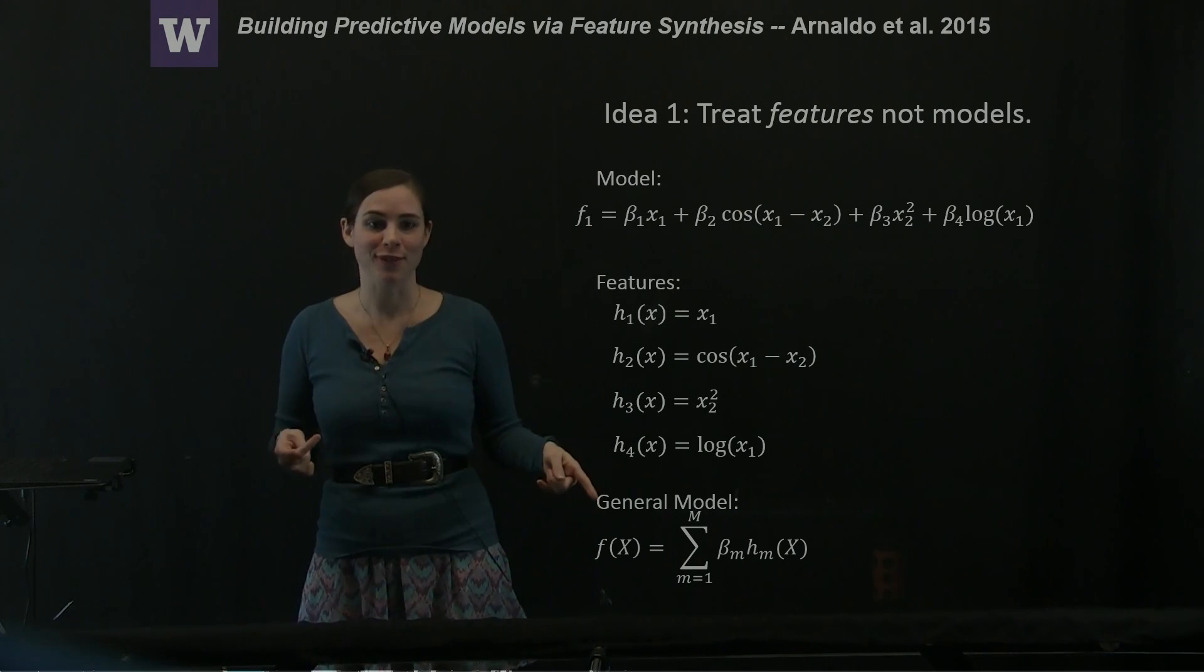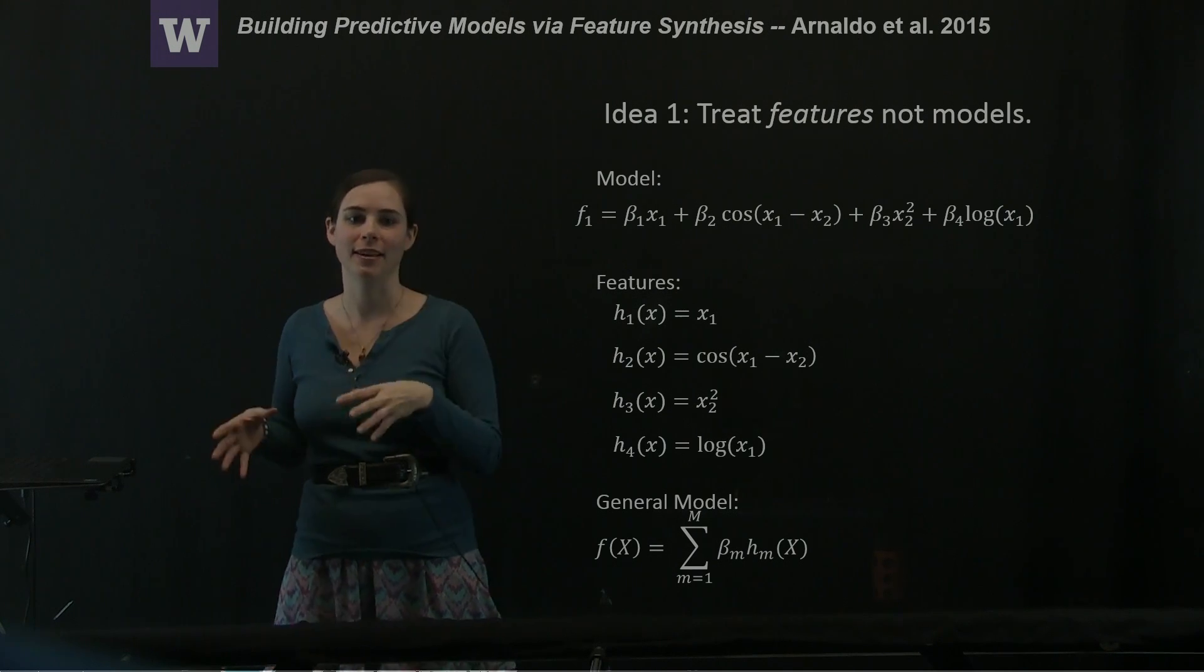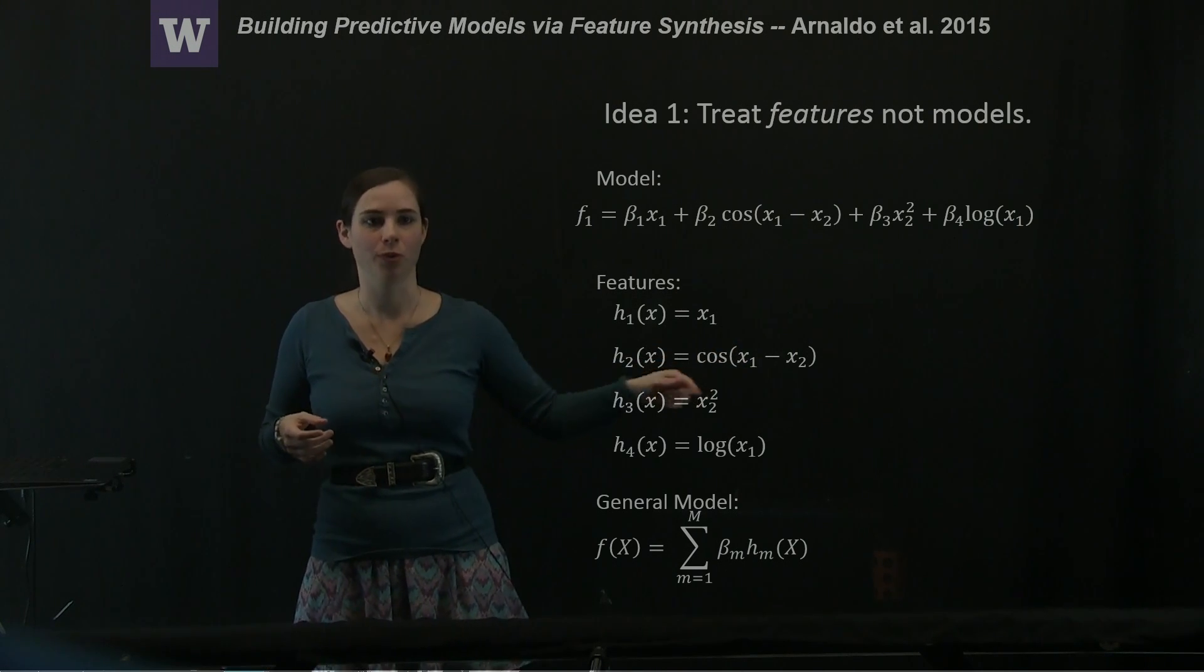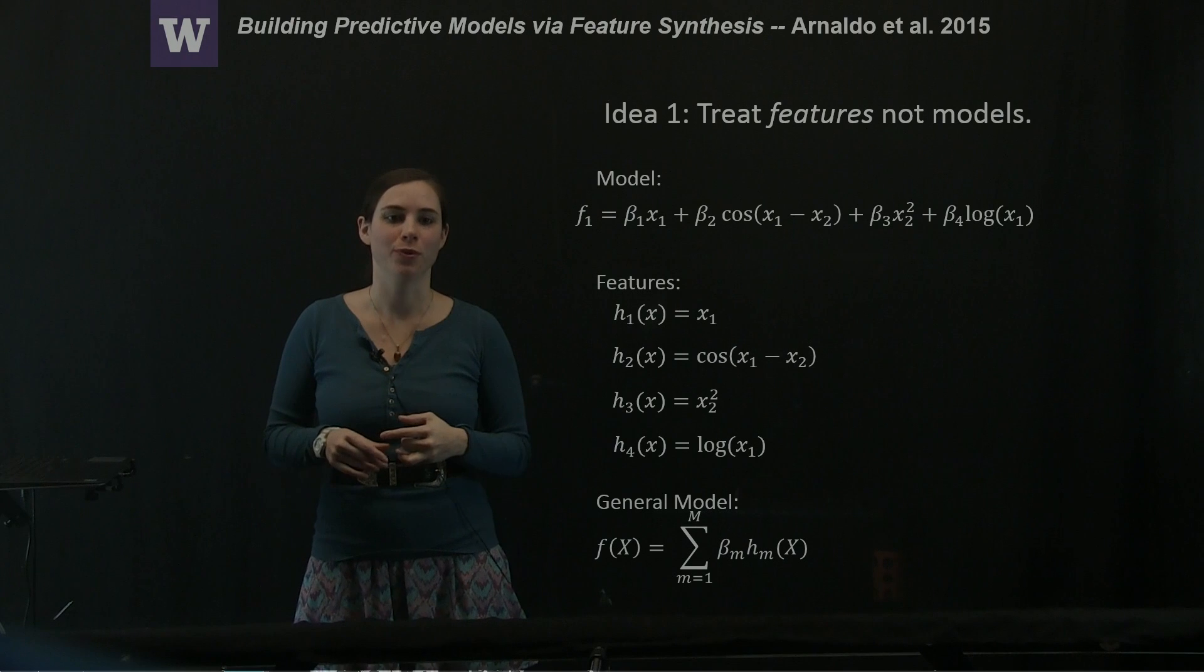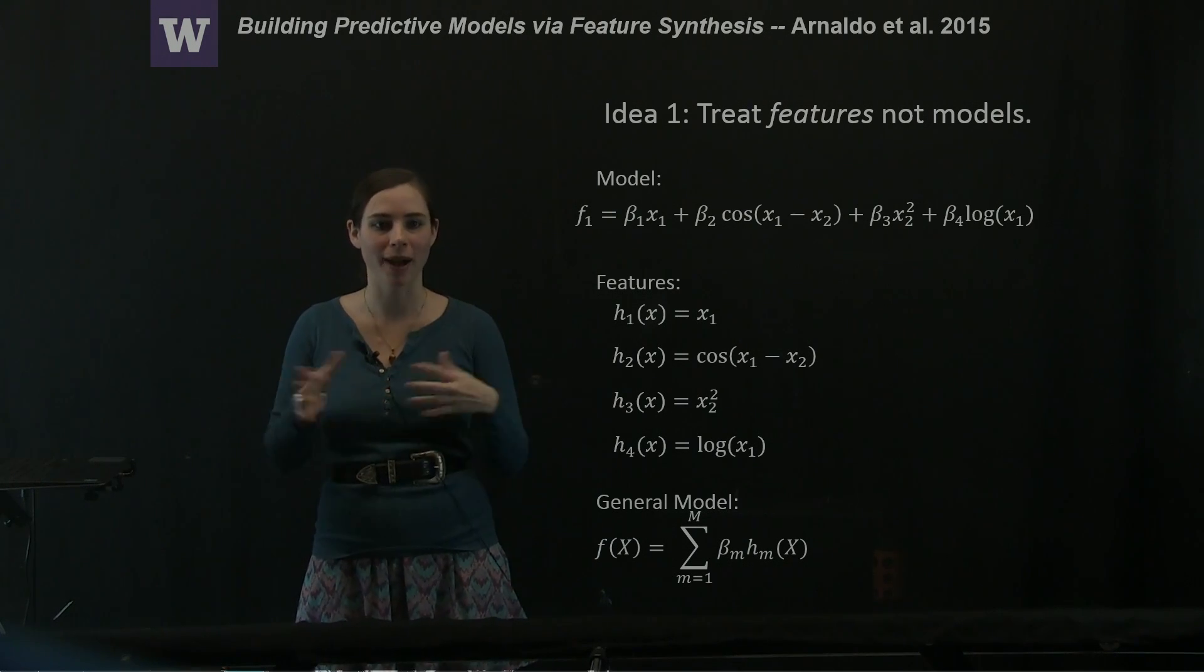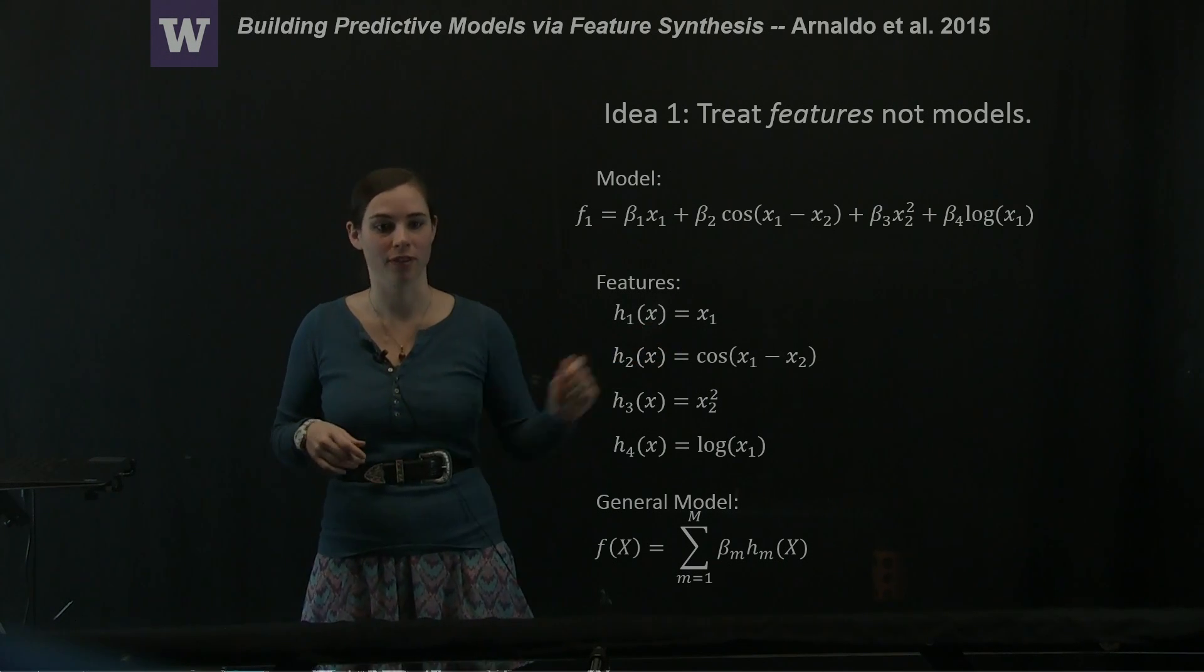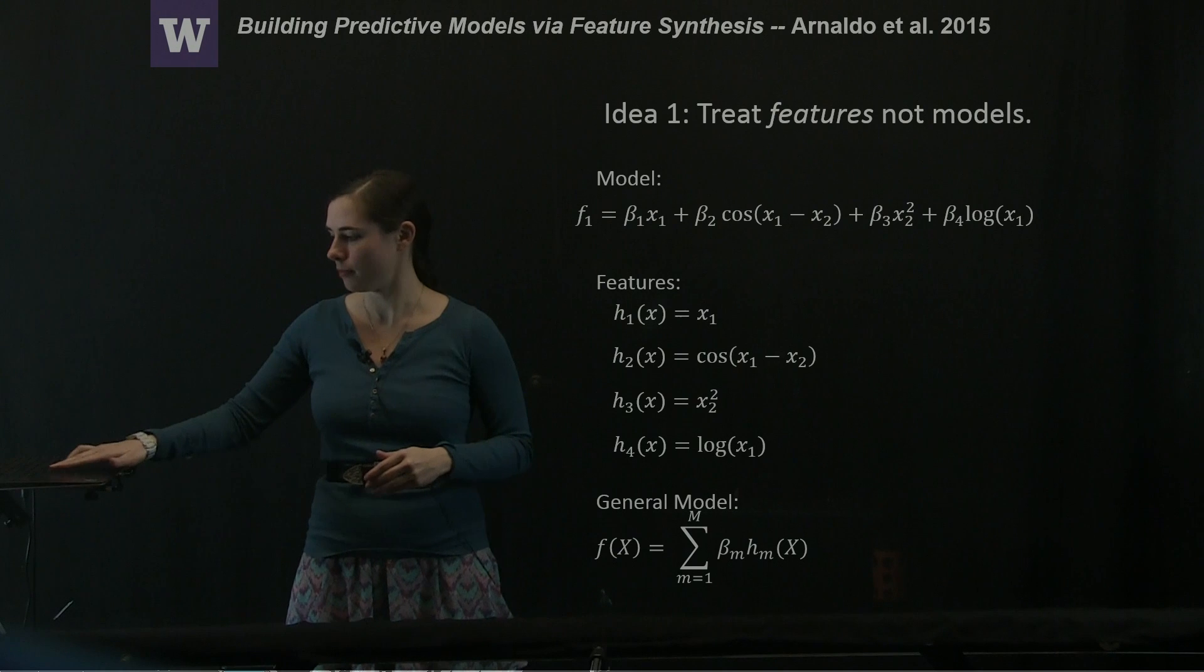You can actually store each of these features as plugging that data into whatever your coefficient is. And if you then want to combine these in different ways, you can just combine those vectors as opposed to storing the symbols.